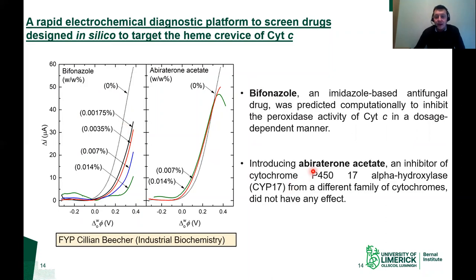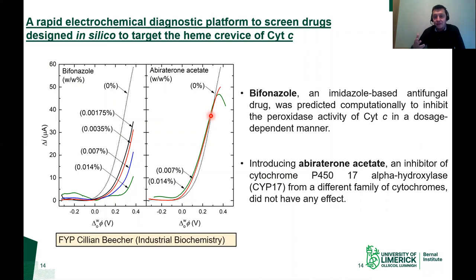As a control, we looked at abiraterone acetate, an inhibitor of cytochrome P450-17 alpha hydroxylase — a different family of cytochromes. When we added this drug, it did not have any significant effect on our interfacial electron transfer. This confirms that not just any drug will affect our system — only drugs that bind specifically to the active heme site of cytochrome C will decrease our interfacial electron transfer.